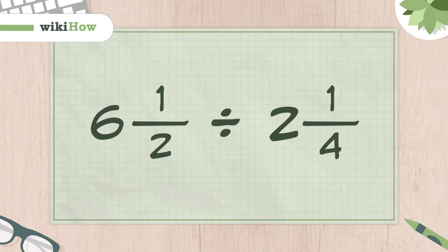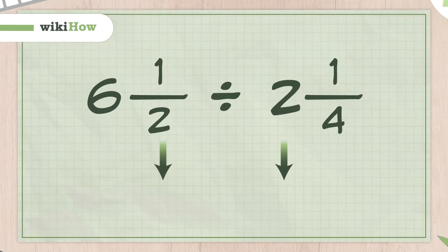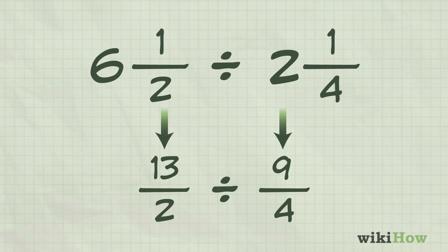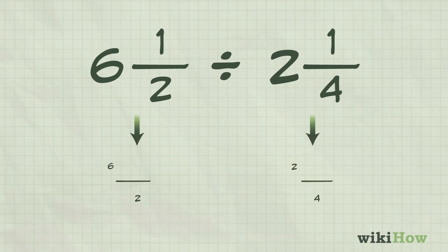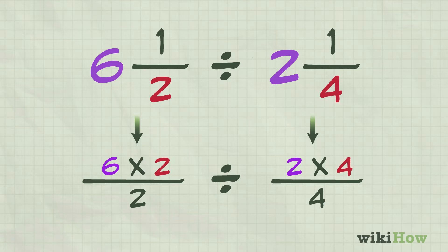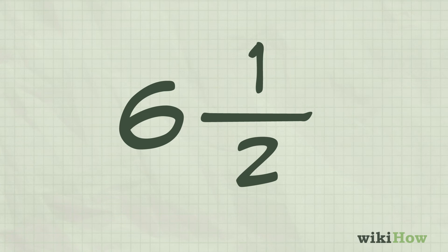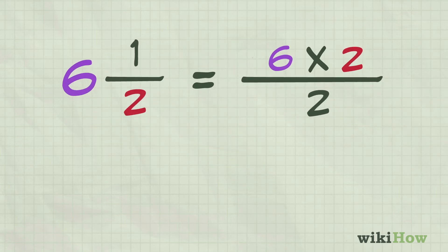The easiest way to divide mixed fractions is to convert them into improper fractions first. Start by multiplying the whole number in each mixed fraction by its denominator. For example, if one of the fractions is 6 and a half, multiply 6 times 2 to get 12.